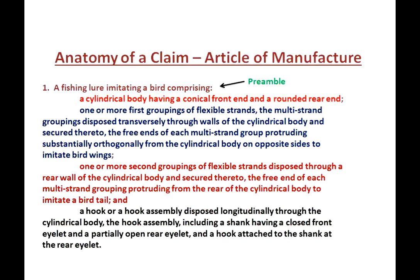This is the anatomy of an article of manufacture claim. Again, it has a preamble. The fishing lure is an apparatus but it's an article of manufacture sort of apparatus, so we use that in this example. The preamble says 'a fishing lure imitating a bird comprising.' It has several parts: a cylindrical body, wings describing the bird's wings, a part describing the bird's tail, and a hook or hook assembly. The rest of the disclosure describes further detail of each part and how the parts relate to one another in the article of manufacture.